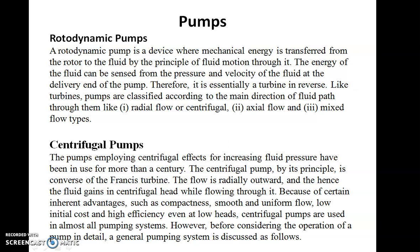Like turbines, pumps are also classified according to the direction of fluid path through them. Hydraulic turbines were classified based on the direction of fluid path as radial flow turbines and axial flow turbines. Similarly, pump classification includes radial flow pumps, axial flow pumps, and mixed type flow pumps. The radial flow pumps are also called centrifugal pumps, and the axial flow pumps are called propeller type pumps. The focus of this unit is on centrifugal pumps.